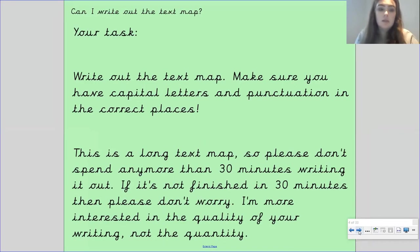Right, so your task. I want you to write out the text map making sure that you've got capital letters and punctuation in the correct places. Now I know that this is a long text map, so please don't spend any more than 30 minutes writing it out. If it's not finished in 30 minutes then don't worry, I'm more interested in the quality of your writing rather than the quantity. So I want to make sure that you are writing sentences perfectly with your finger spaces, with your capital letters, with your punctuation in the correct places, with your spelling correctly, rather than writing it all out and it not being done to a good standard. You know, take your time, make sure that you're writing it perfectly. If you only write as much as I've just written then that's absolutely fine, please don't worry about not finishing the whole thing. And as I said, only give yourself 30 minutes to do this task. Please make sure you upload your work to tapestry Gandhi class and I will see you next time bye.